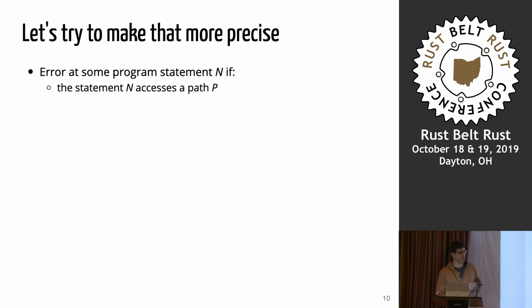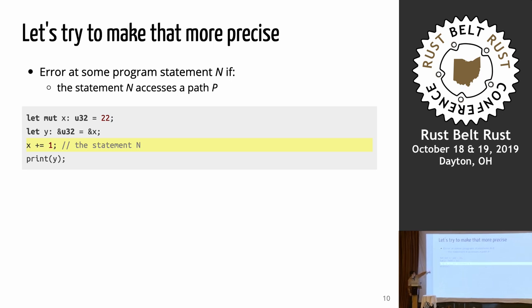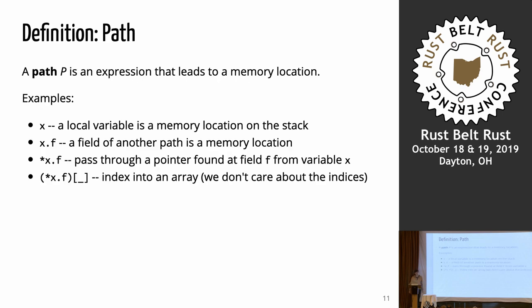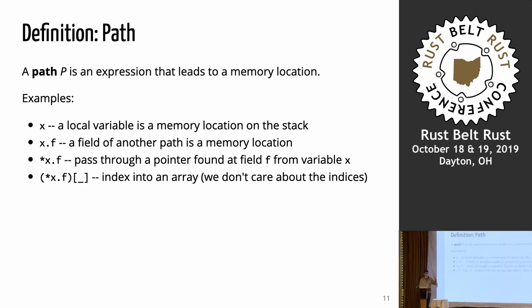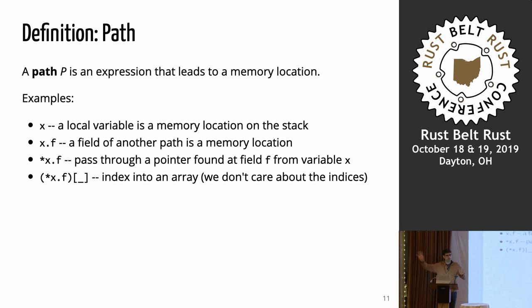If we try to make that error more formal: you get an error at some program statement N if that statement N accesses a path P. What is a path? A path is basically some expression that leads to a memory location — a local variable x is a path. Paths can be composed: x.f is some field of that local variable. Star x.f follows a pointer off into memory. You can also have indexing. Other kinds of expressions like the number 22 or calling a function are not paths — those produce values. A path is kind of something you could assign to.